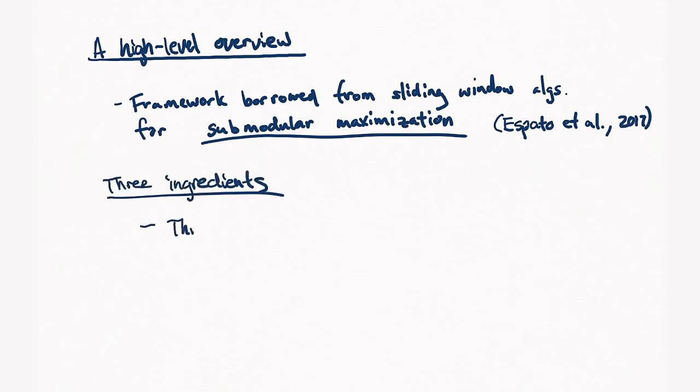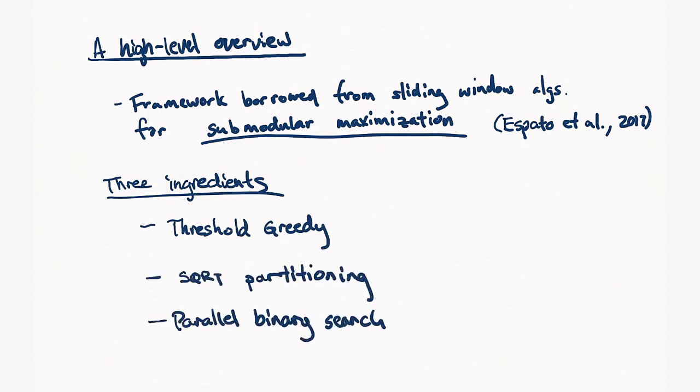On a high level, our algorithms consist of three ingredients. The first is a threshold-greedy procedure. The second is a square root partitioning procedure. And the last is a parallel binary search. The threshold-greedy procedure and parallel binary search allows us to handle the case when things are insertion only. And the square root partitioning procedure allows us to handle the sliding window events by facilitating deletions at the front of the stream.